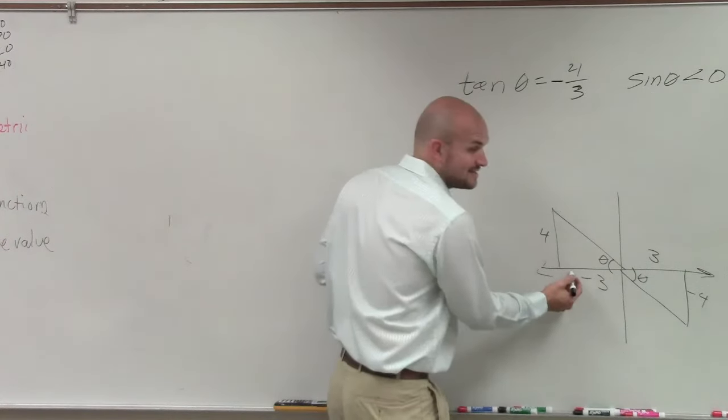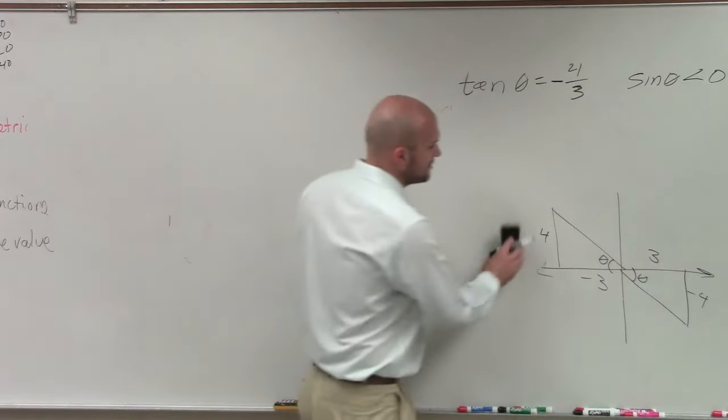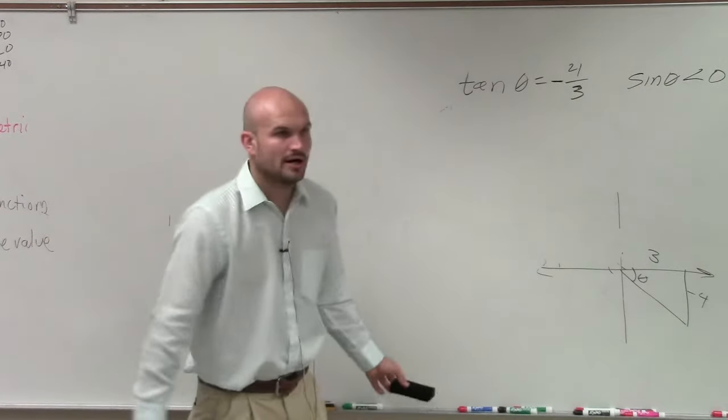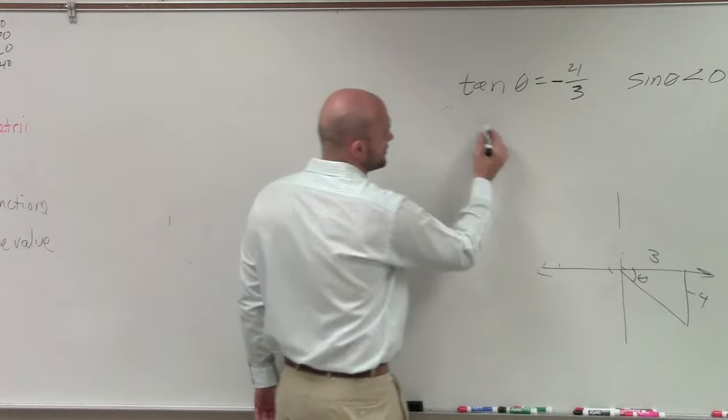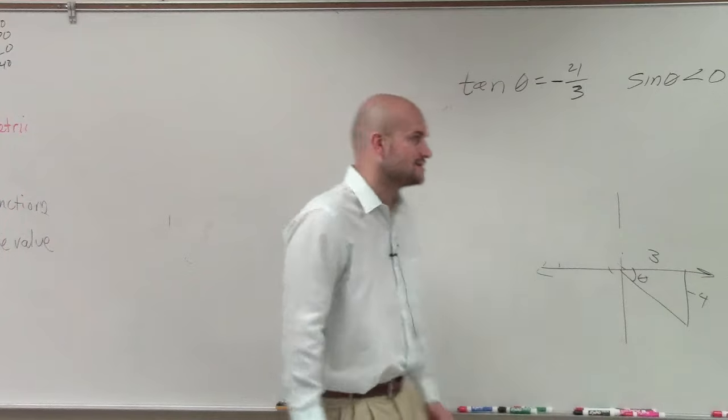Yeah, exactly. Sine is less than theta in the second or in the third and the fourth quadrant. So guess what? This triangle, we're not going to use. All right, so now here's the triangle that I'm going to use. And now can I go ahead and use this to find the hypotenuse? Yes.